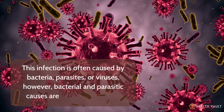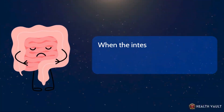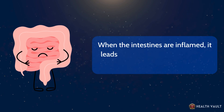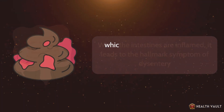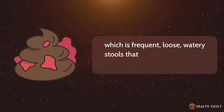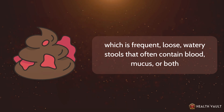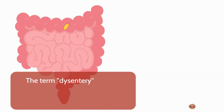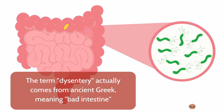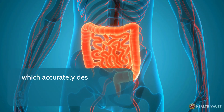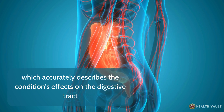However, bacterial and parasitic causes are the most common. When the intestines are inflamed, it leads to the hallmark symptom of dysentery, which is frequent, loose, watery stools that often contain blood, mucus, or both. The term dysentery actually comes from ancient Greek, meaning 'bad intestine,' which accurately describes the condition's effects on the digestive tract.